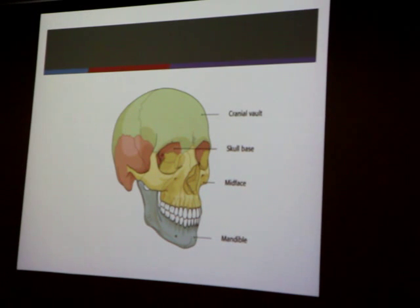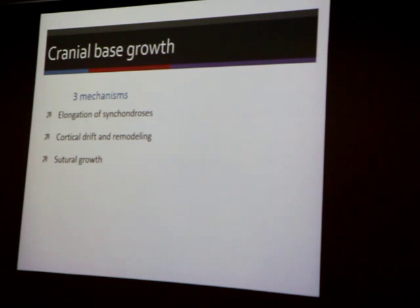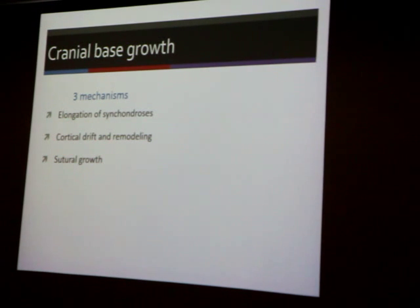Back to the growth mechanisms we already discussed in the concepts lecture. We have elongation of synchondrosis, cortical drift and remodeling, and suture growth. These three types of growth all happen — sometimes at the same time, sometimes at different times — in the cranial base.